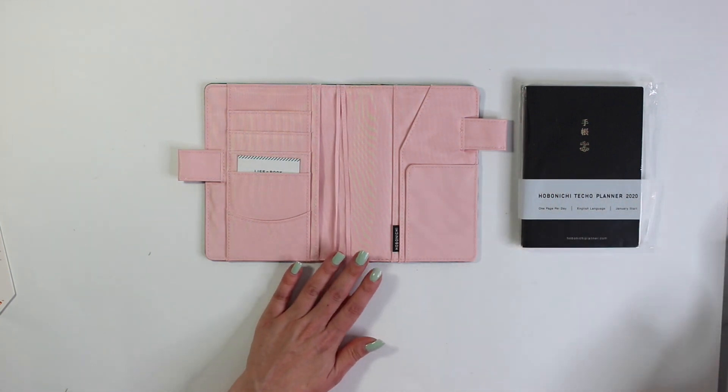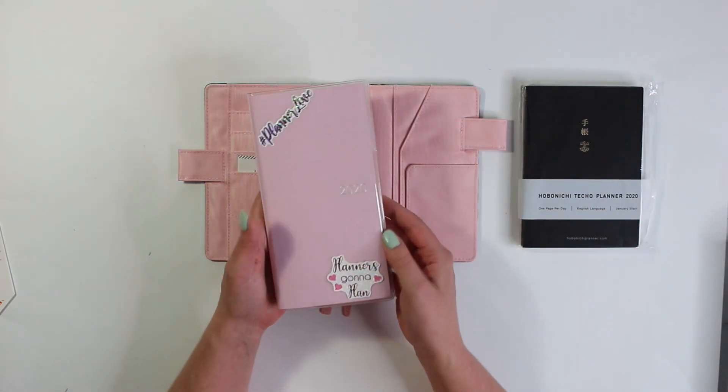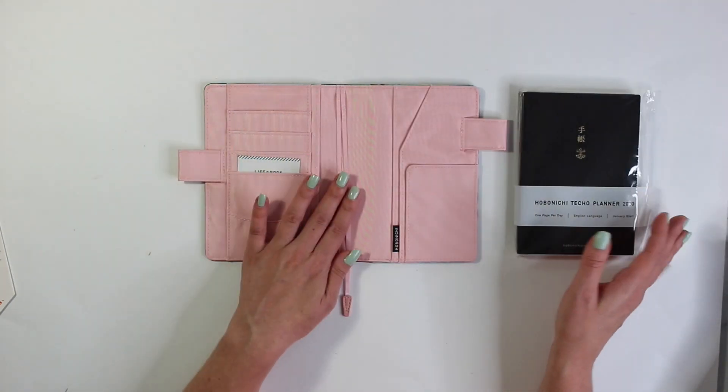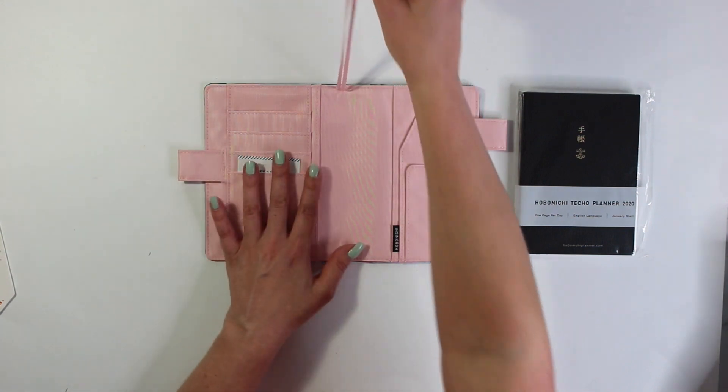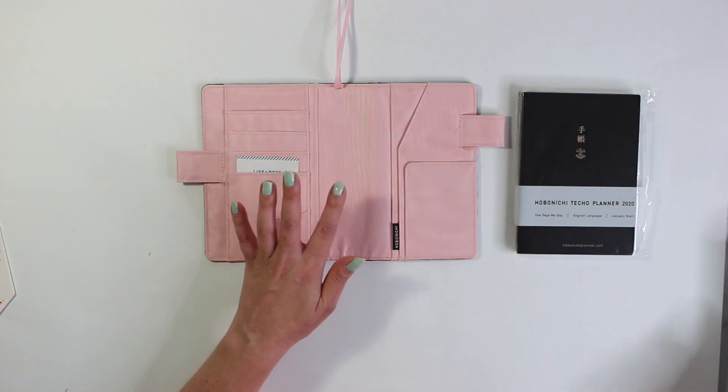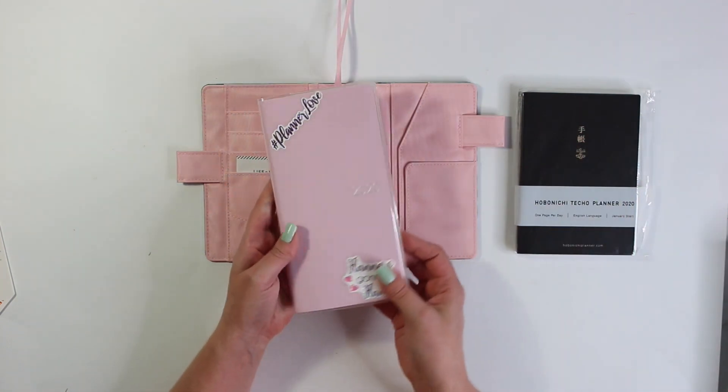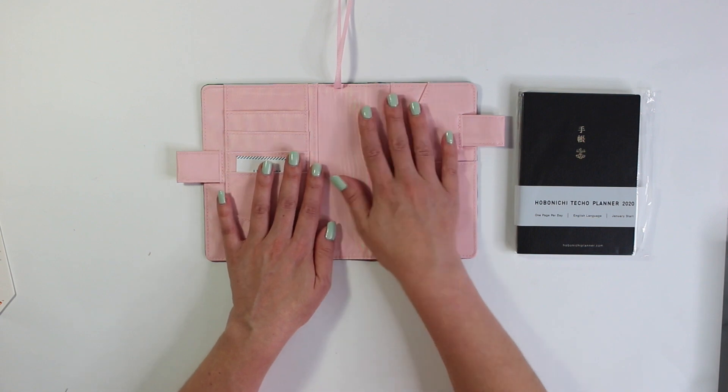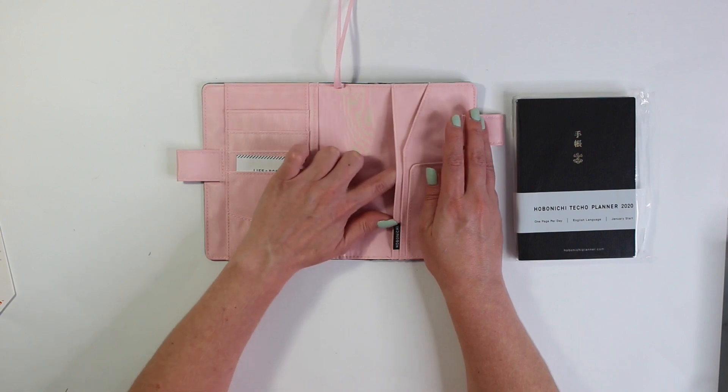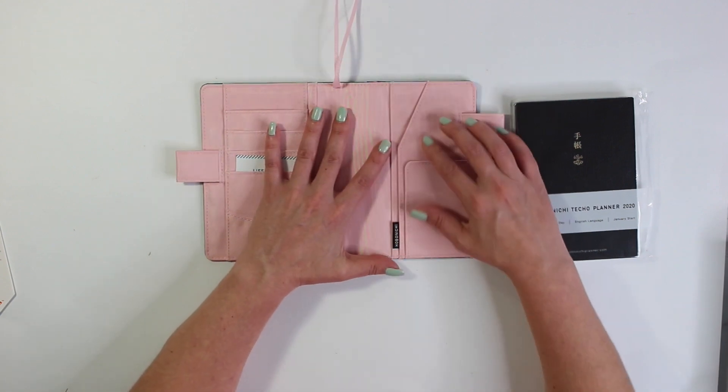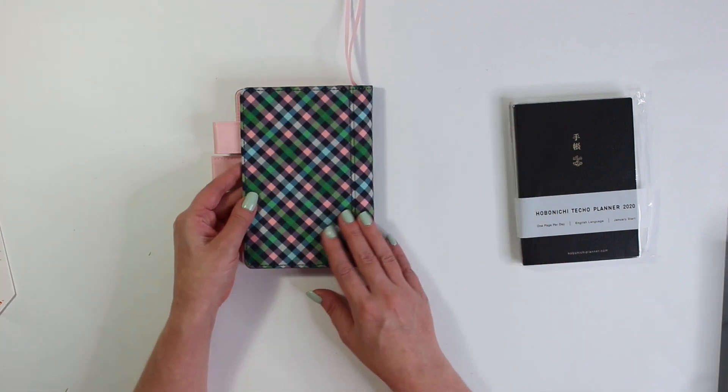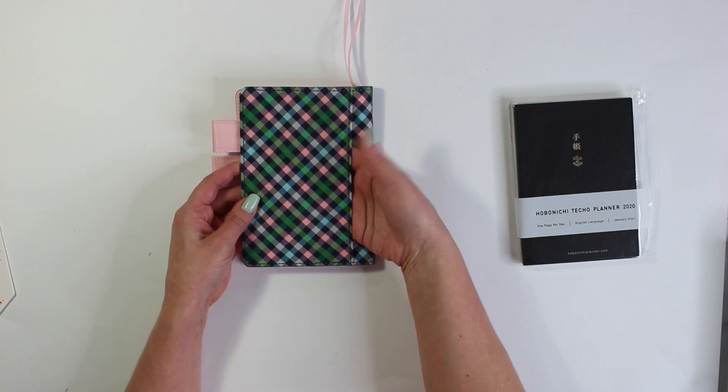Now I typically cut my bookmarks off of the Hobonichi weeks planner but the Techo planner does not have bookmarks and I may end up using these because I can just push them out of the side. When I took pictures in my Hobonichi weeks they always just seem to be in the way and I never really use them to bookmark my place. So on the right hand side there are a couple extra more pockets. So one down below, a little side pocket here and then one up top. So lots of fun pockets.